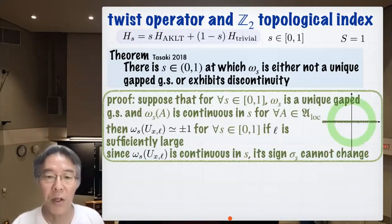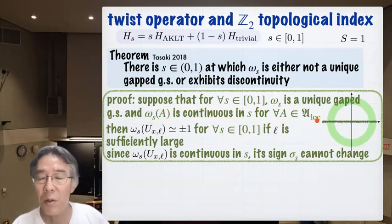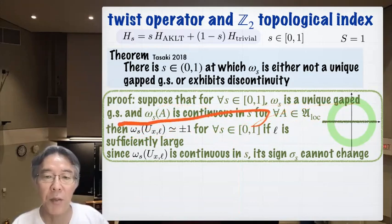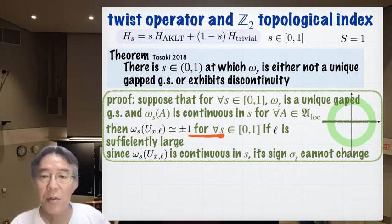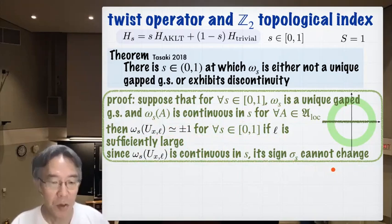Here's the proof that there is a phase transition. Suppose there is no phase transition — meaning for any s, omega_s is a unique gap ground state and depends continuously on s. From the gappedness, omega_s(U) is either close to +1 or close to −1. From continuity, sigma(s) cannot change sign. But sigma(0) and sigma(1) are different — contradiction. This is an almost complete proof: very short, simple, and based entirely on the twist operator.